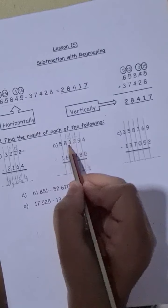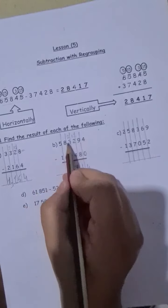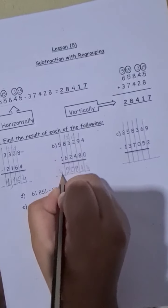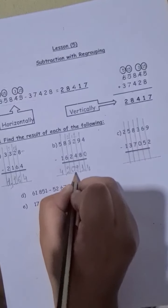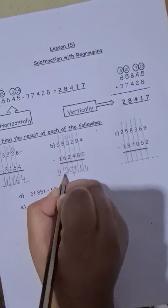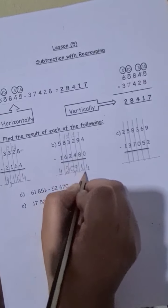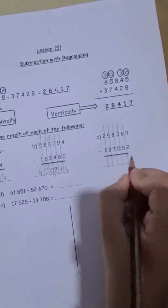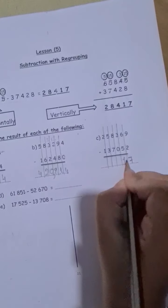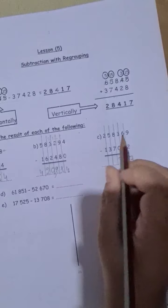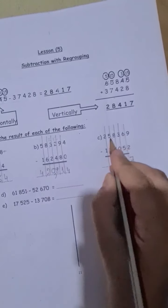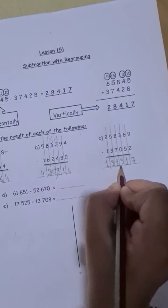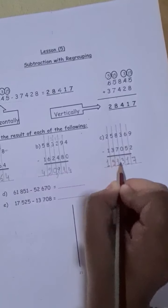Now, then I will go to the thousands. 2 minus 2 is 0. 8 minus 6 is 2. 5 minus 1 is 4. So at the end, what number I get is 420,814. Here, I have 9 minus 2 is 7, 6 minus 5 is 1, 3 minus 0 is 3, 8 minus 7 is 1, 5 minus 3 is 2, 2 minus 1 is 1. And the answer is 121,370.